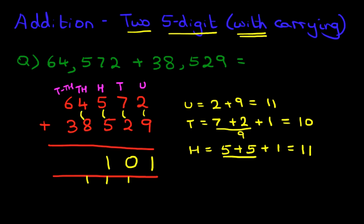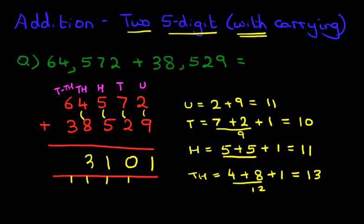Now let's do the thousands. We have four plus eight, plus the one we have carried over. So four plus eight is twelve, plus the one is thirteen. So let's write this down. We have one and three over here.